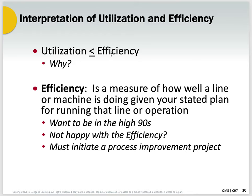Efficiency is a measure of how well a line or machine is doing, given your stated plan for running that line or operation. We want it to be in the high 90s. Not happy with the efficiency? Then we have to initiate a process improvement project — that's on you, not the manufacturer. You're not preparing things properly, there's waste in the system, too much lag time here or there. Put a small team together — anywhere from one to ten people — to look at how to get that efficiency up. We want to be in the high 90s. Do we ever get to 100%? Sure, occasionally, but you can't guarantee that all the time because there are always unforeseen things that happen.